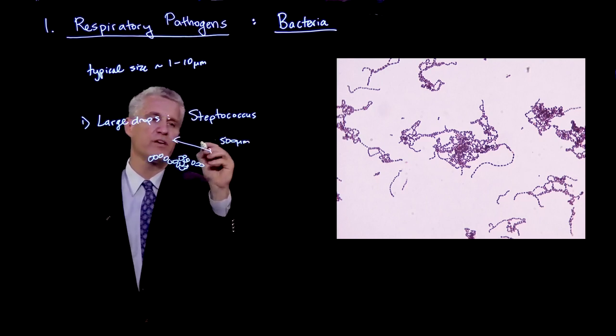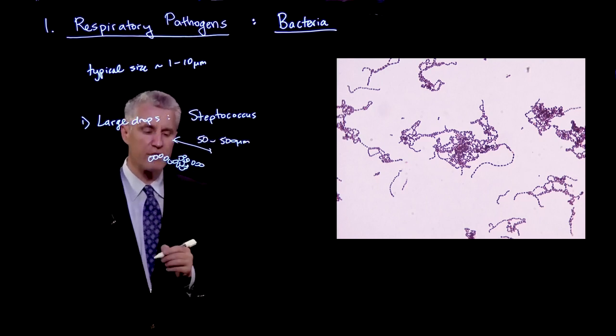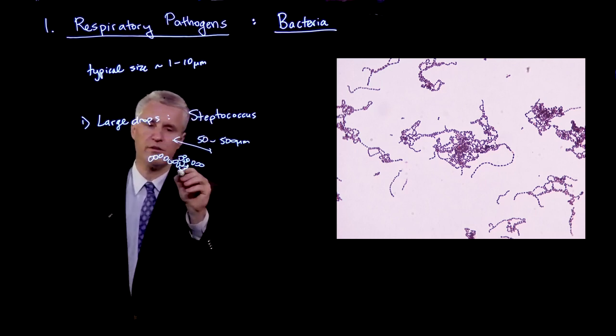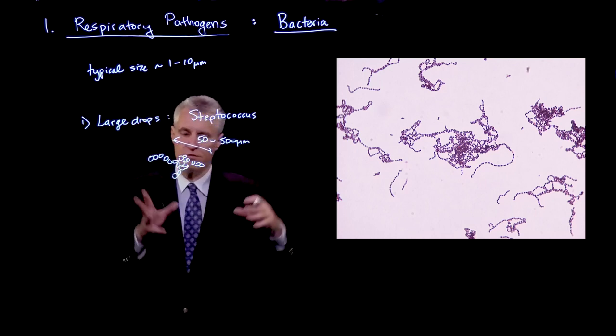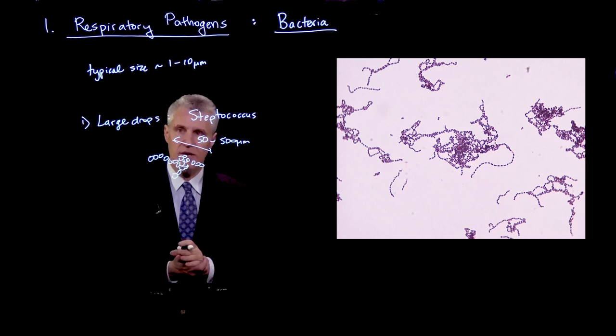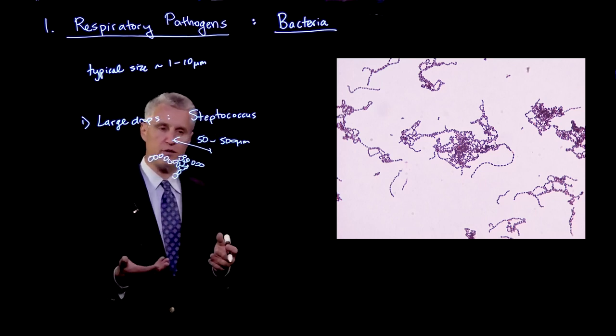So it may not be always that big, but it might be, let's say, 50 to 500 micron sort of colonies. And they can often be these sort of stringy type structures. And so as a result, those require fairly large droplets.